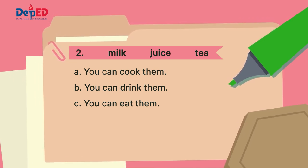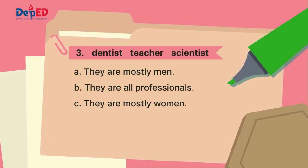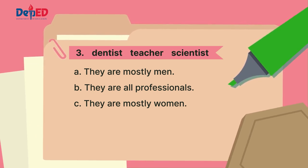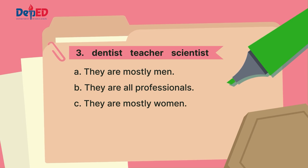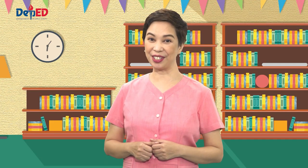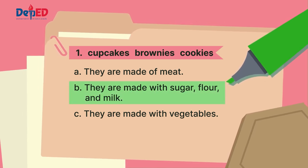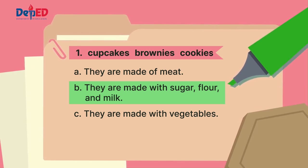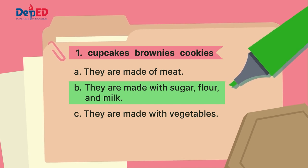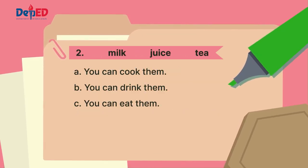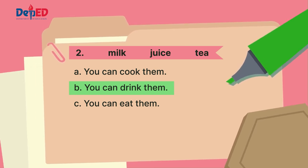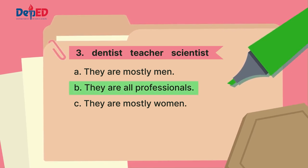Number three: dentist, teacher, scientist. Letter A: they are mostly men. Letter B: they are all professionals. Letter C: they are mostly women. For number one, the answer is letter B — cupcakes, brownies, and cookies are all made with sugar, flour, and milk. For number two, the answer is letter B — you can drink milk, juice, and tea. For number three, the answer is also letter B — dentist, teacher, and scientists are all professionals.